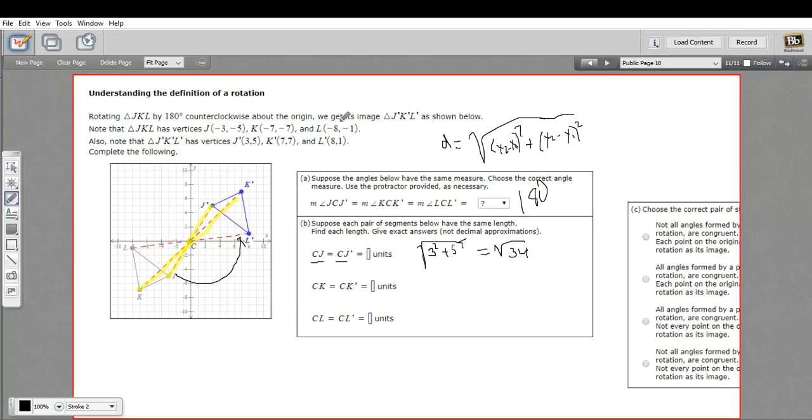Let's try ck. So k is negative 7, negative 7. So that's 7 squared. Well, the square root of 7 squared plus 7 squared. So 49 plus 49. So that is the square root of 98.